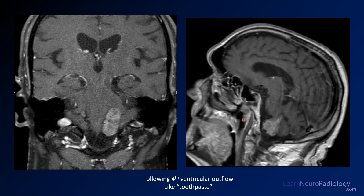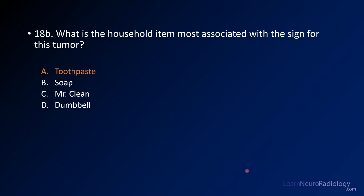The coronal and sagittal reformats show the same finding: an avidly enhancing mass squeezing out of the fourth ventricle — just like toothpaste. So the answer to the second question: the household item associated with the sign for this tumor is toothpaste.